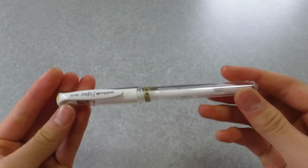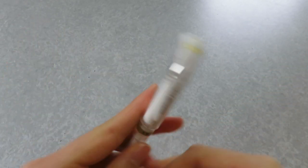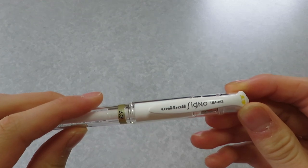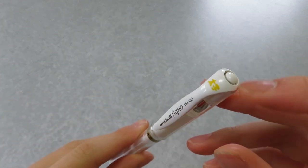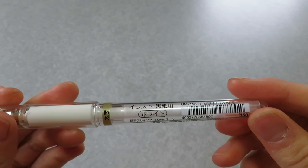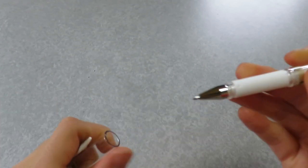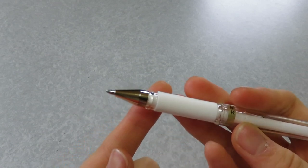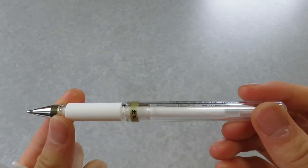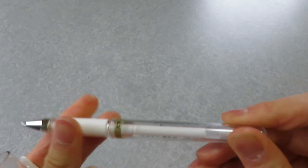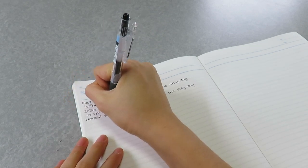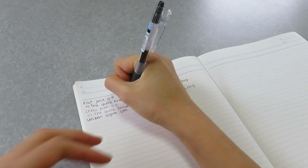The next pen that I got is the Uniball Signo in white in the size 1.0. And this is the UM-153. And I've got to say, this is the best white pen I've ever tried. I had a Sarasa one, but this one is definitely a lot bolder and it has much more color. And I actually ended up getting black sticky notes from Daiso, which I showed in the Daiso stationery haul video.